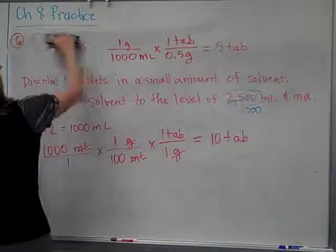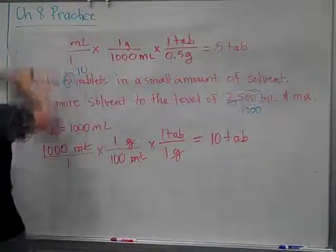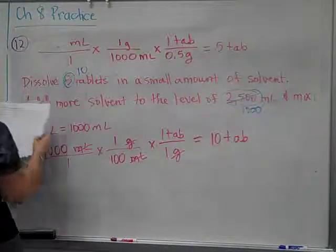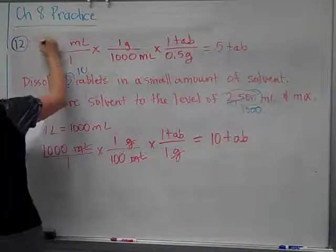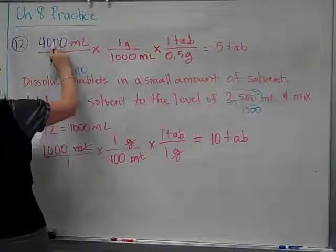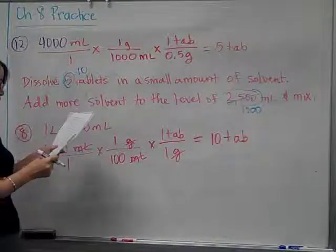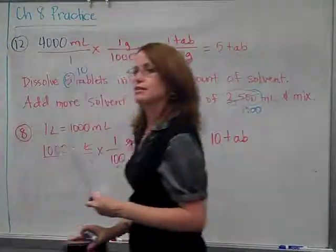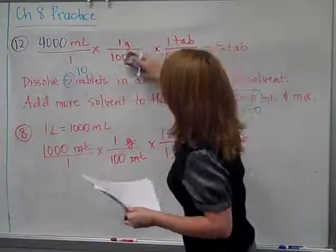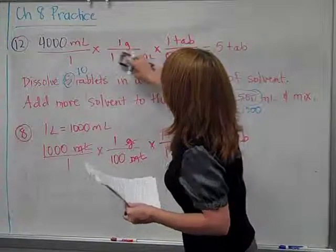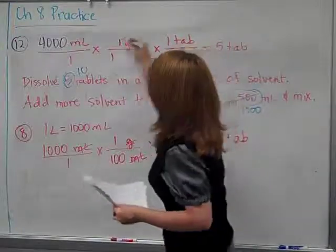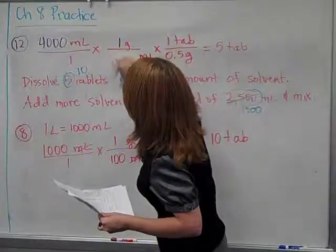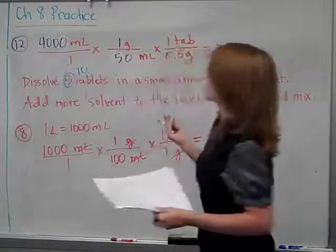I want a total of how many milliliters? Okay, so I want 4,000 milliliters. How do you do the 1 to 50? Yeah, just 1 over 50. What are the units? Grams and milliliters. Yeah, grams and milliliters. So 1 over 50. So, you know, even though it's not a percent, you still use it the same way.